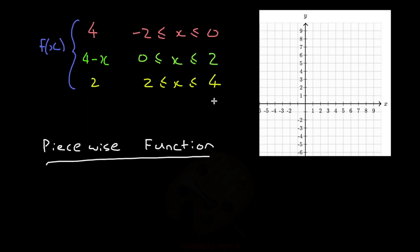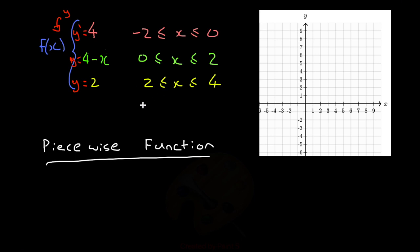Another special type of function is called a piecewise function. This is basically made up of different types of functions — so this is one function, this is another, and this is another. When thinking of graphs, you can think of f(x) as meaning the y. This column tells you what the line or curve is — so this would mean y = 4, this would mean y = 4 minus x, and again y = 2. And this column over here tells you the range of the functions — the range of all the x values.